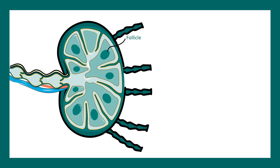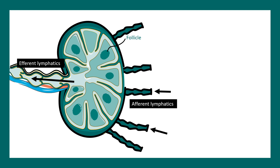Now let us talk about the subdivisions of the lymph node. Here we can see the efferent lymphatics and here the afferent lymphatics. The afferent lymphatics are the entry point for several immune cells into the lymph node. The efferent lymphatics are the exit point for several cells out from the lymph node.